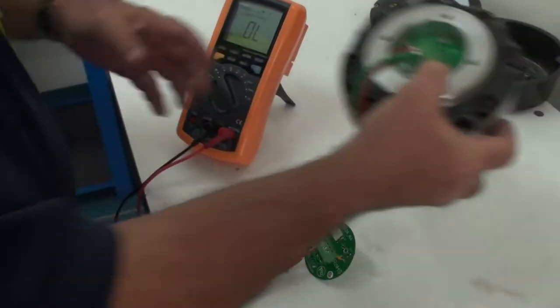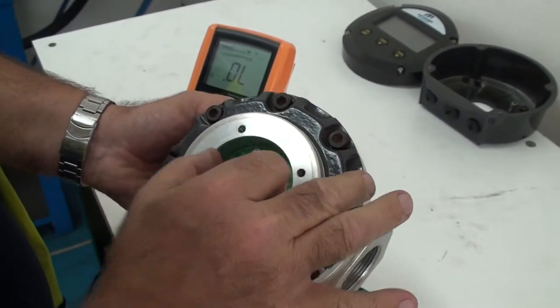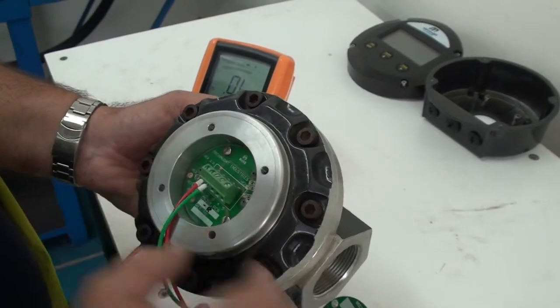Now, as you can see, the pulse board sits in the top of the flow meter. So we need to pull that out, and that's done by undoing these two screws.